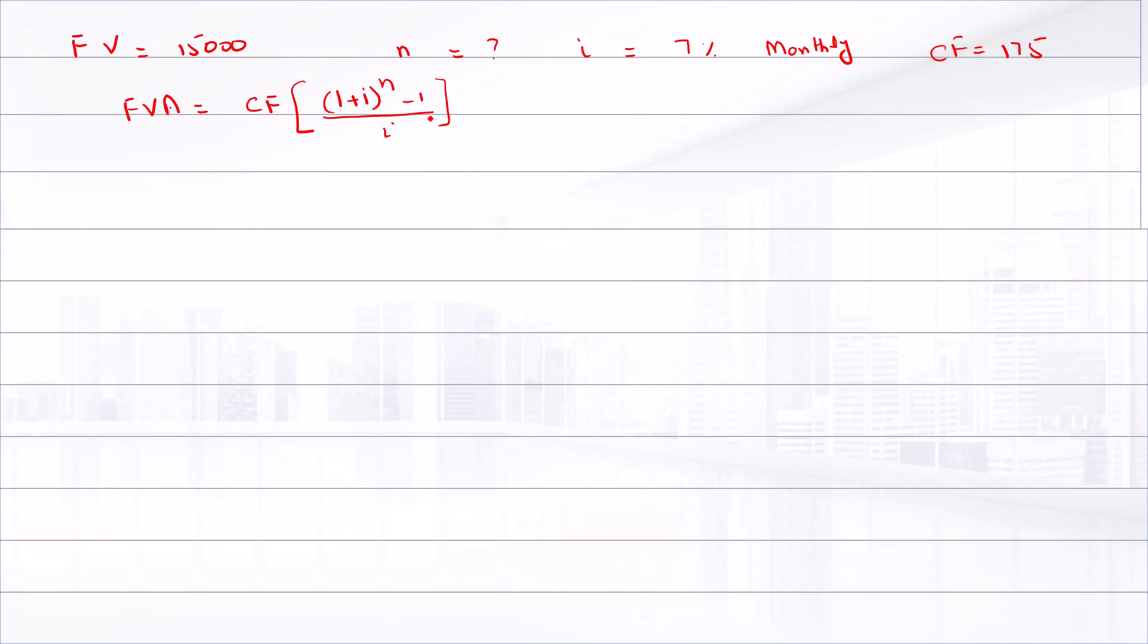We have to solve this equation for n. So by putting values, 15,000 equals 175 times (1 plus 0.07 divided by 12) raised to power n, minus 1, divided by 0.07 divided by 12.